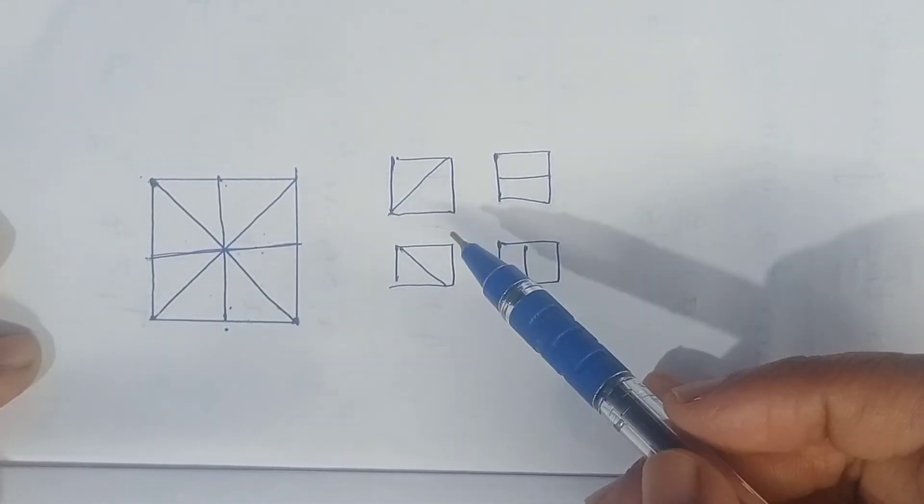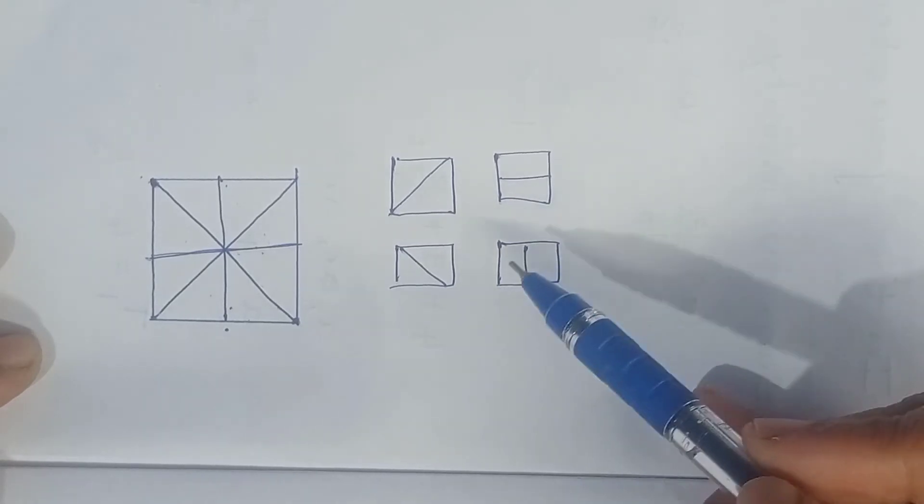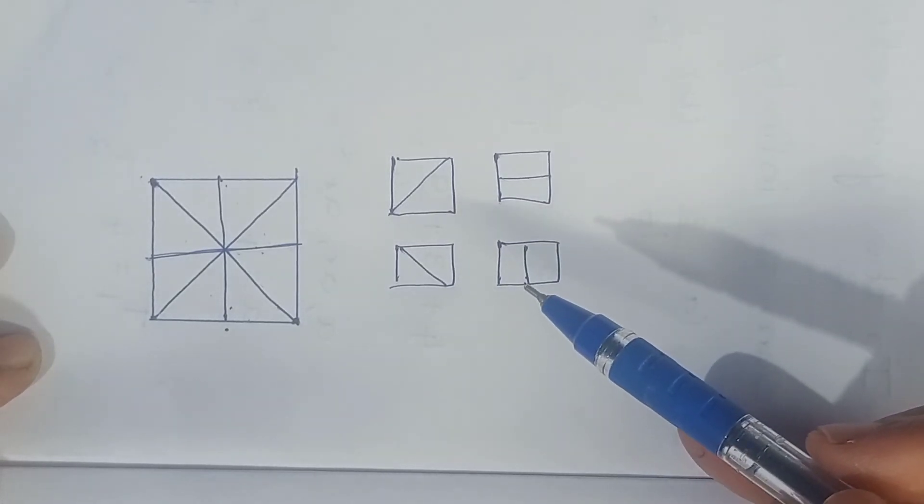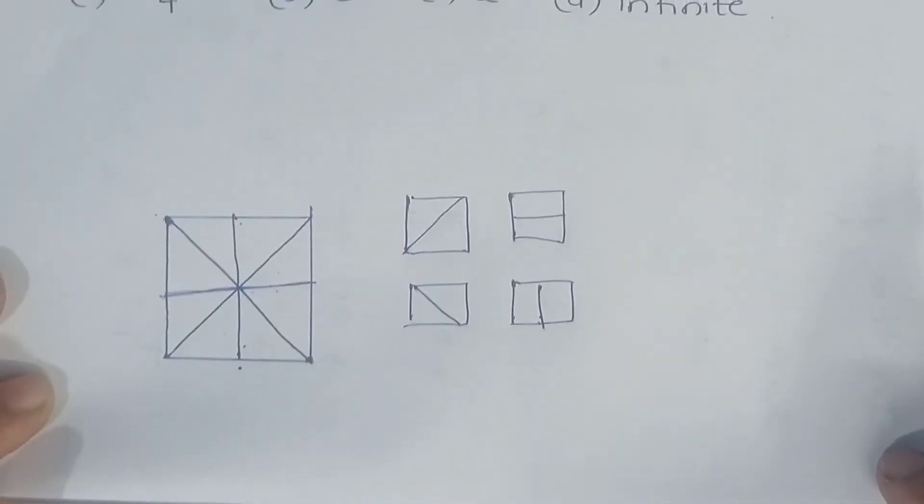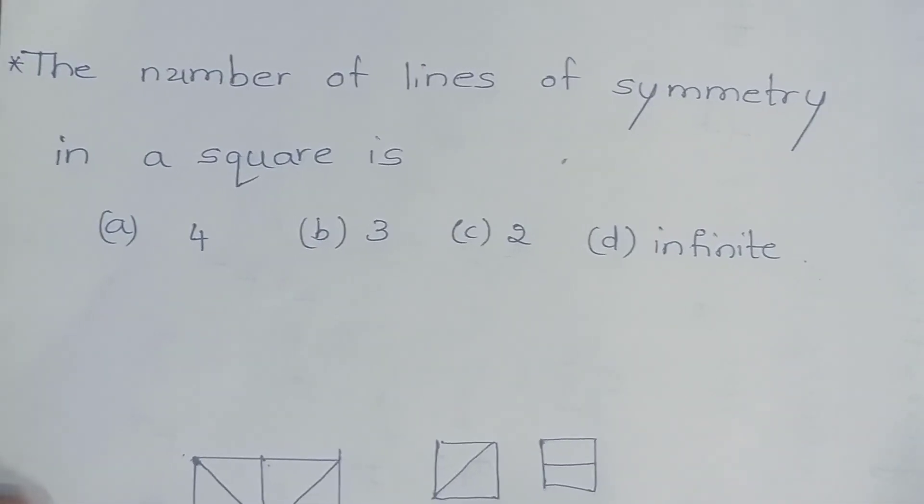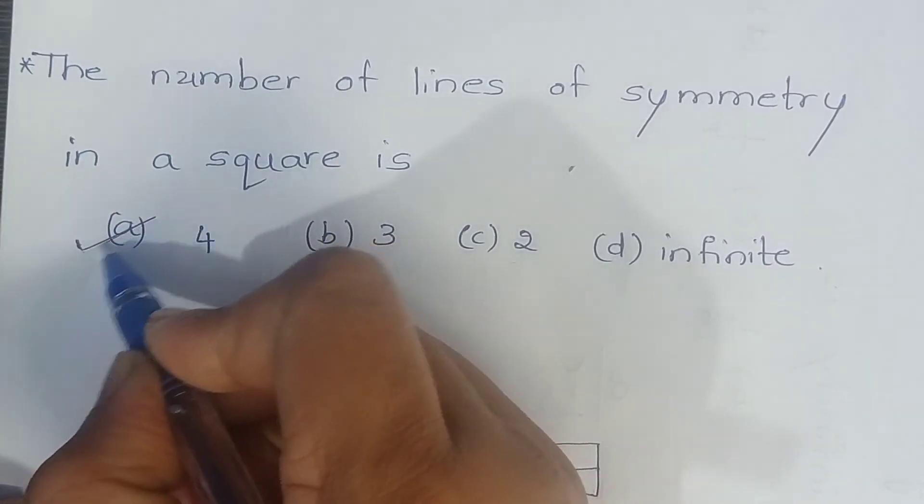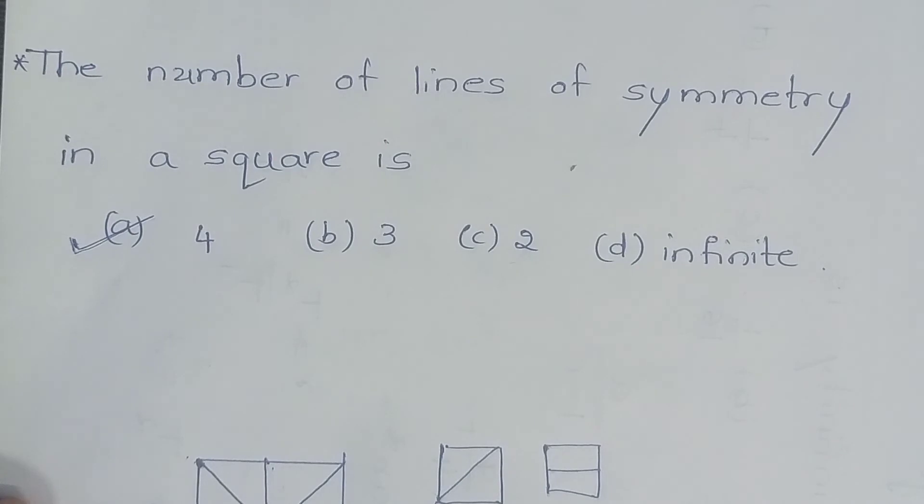This means you can draw 4 lines of symmetry in a square. Therefore, our answer is 4. Therefore, option A is the correct answer. Hope you have understood. Thank you.